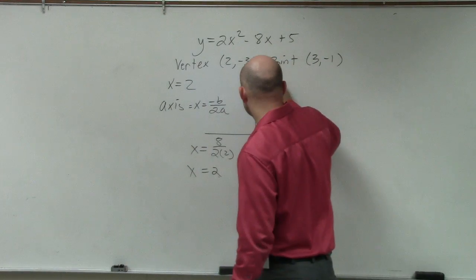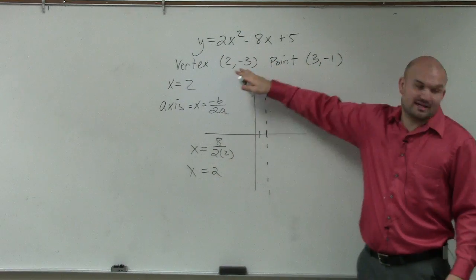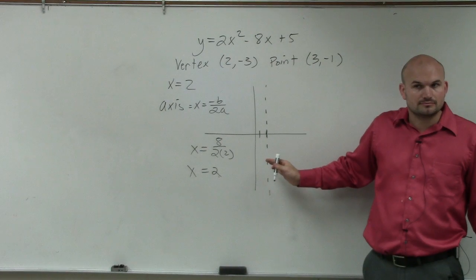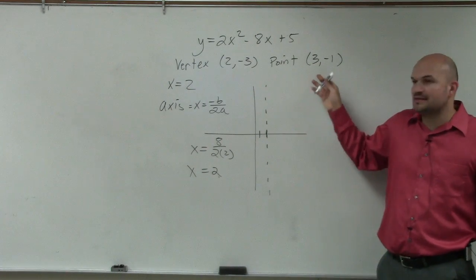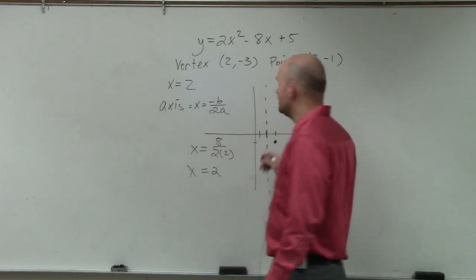So let's go ahead and graph this. So without even knowing that that's the vertex, I know the axis of symmetry is 2. Now, let's plot this point. 1, 2, 3, negative 1. Ladies and gentlemen, remember,